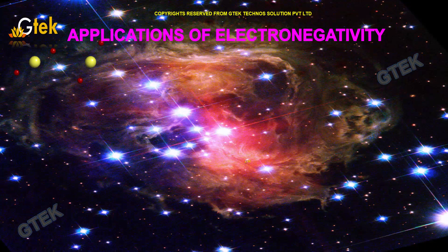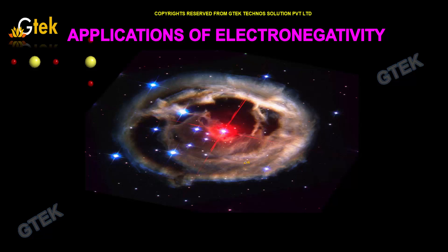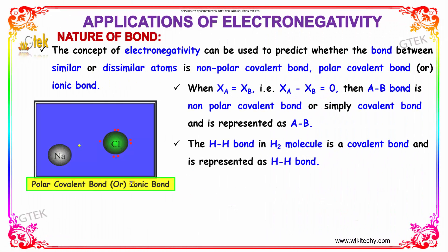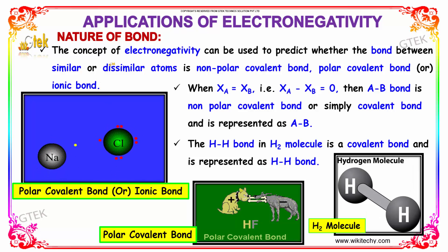Let's think about the applications of electronegativity. The first one is nature of bond. The concept of electronegativity can be used to predict whether the bond between similar or dissimilar atoms is non-polar covalent bond, polar covalent bond, or ionic bond.